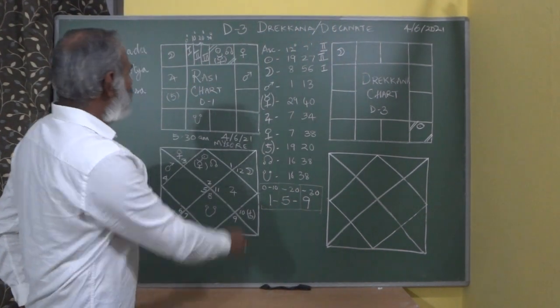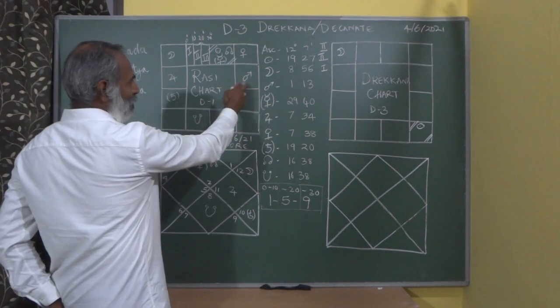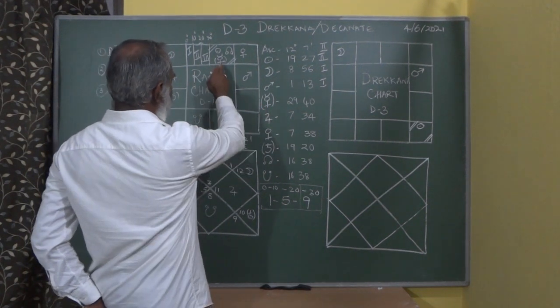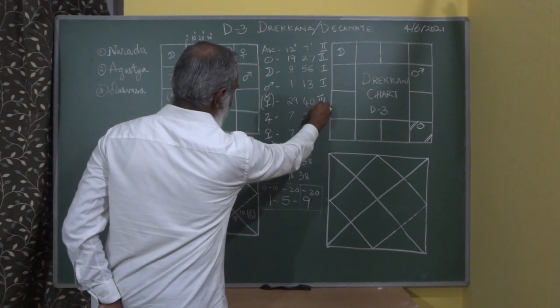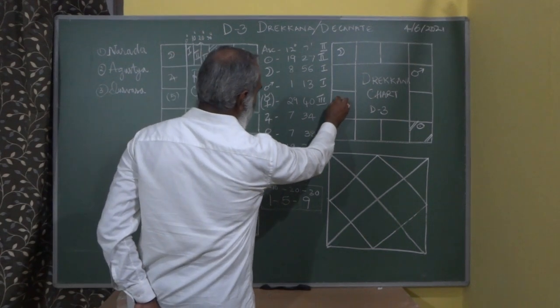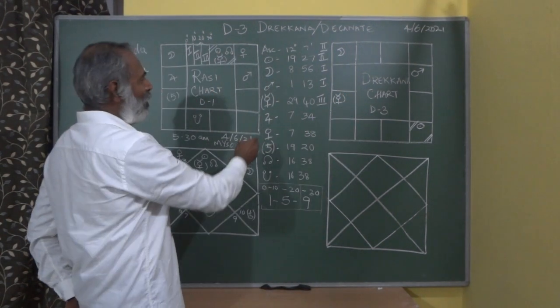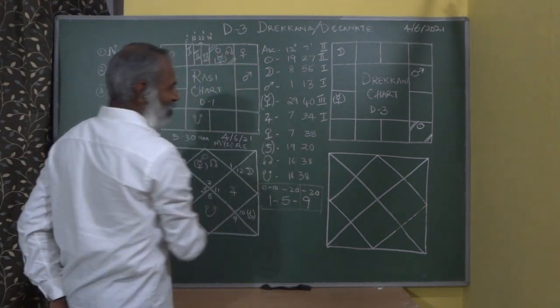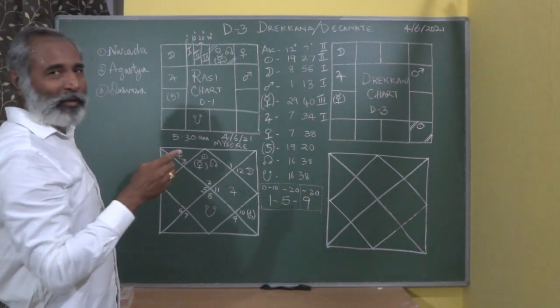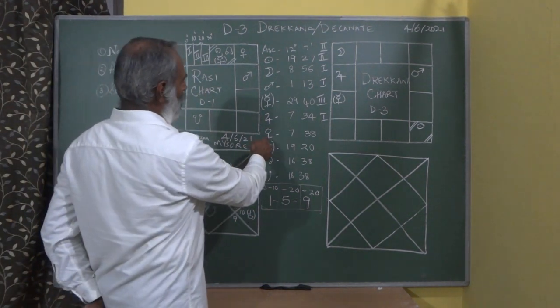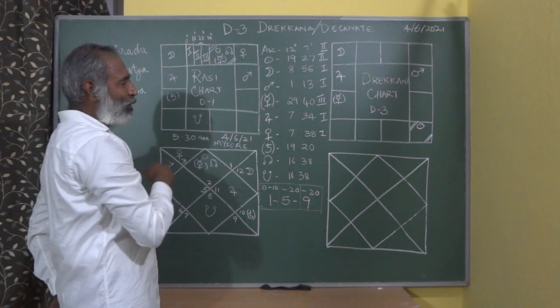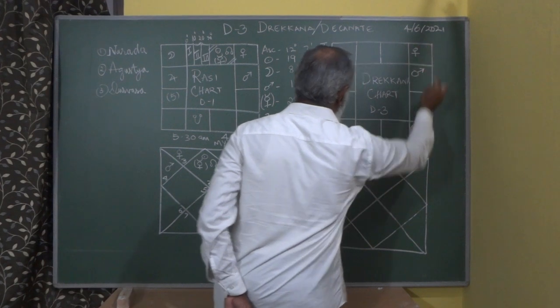Here in Drakana, odd-even signs as we saw in the Hora chart are not relevant. The relevance is in which part of that particular sign the planet is placed. Mars is in the first Drakana in Karka, so it remains in Cancer. Retrograde Mercury is in Vrishabha at 29 degrees 40 minutes in the third Drakana. From Vrishabha, the ninth house is Capricorn, so retro Mercury is placed there.